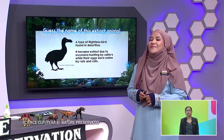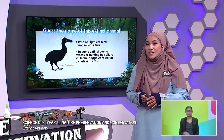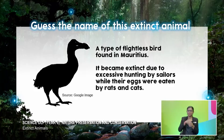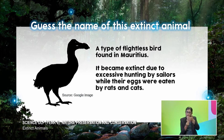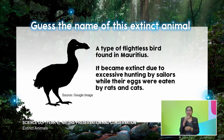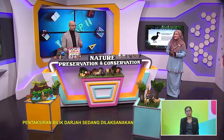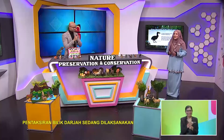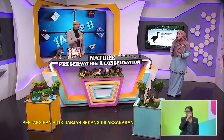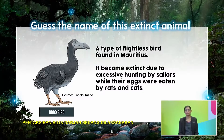Next one. This is a type of flightless bird found in Mauritius — a really small island in Africa. It became extinct due to excessive hunting by sailors, while their eggs were eaten by rats and cats. That's really sad. What is the name of this bird? Among the photos shown earlier, this is the only bird, and the name has the word 'bird' in it. So if I'm not mistaken, this is the dodo bird. Yes, you are right, Abang Sean — it's the dodo bird.